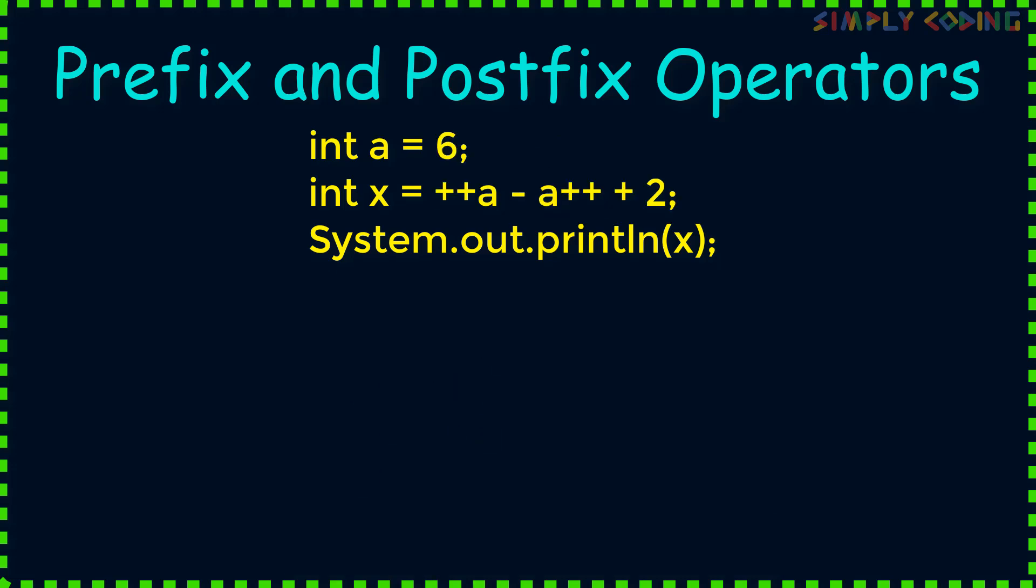Now let's take some problems which have multiple prefix and postfix in one equation. Let's take the first equation. Here first is prefix. So we increment a and then substitute the value, so a becomes 7. Now you need to remember that a is 7 now, not 6 anymore. So when the next postfix operator comes, here we substitute the value 7 and then increment its value to 8. So a has got incremented twice. And we have substituted the value as per prefix or postfix. Now when we solve it, we get the answer as 2.